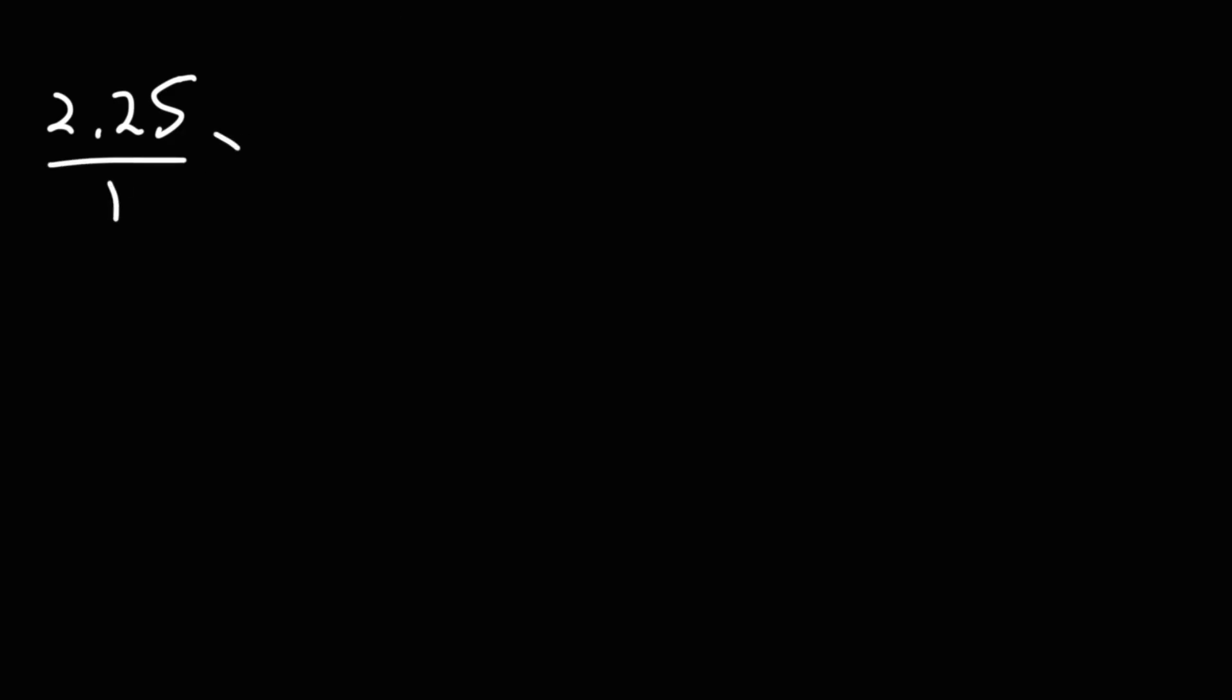What about this one, 2.25? So, here we have two numbers after the decimal point. So, it goes to the hundredths place. So, we're going to put this over 1 and do the same thing. Multiply that number, top and bottom, by 100. 2.25 times 100, if you move the decimal point two units to the right, you'll get 225. 1 times 100 is 100.